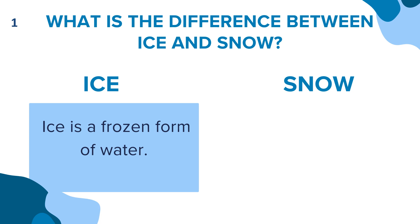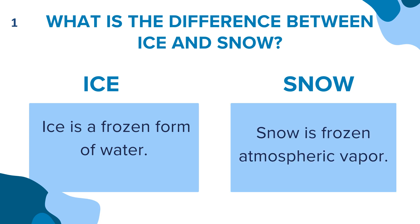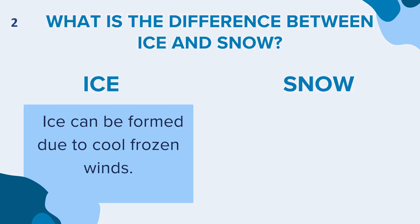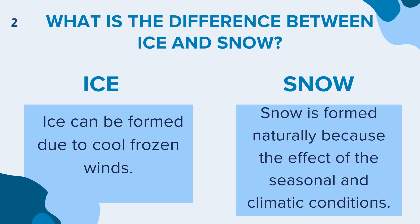First, ice is a frozen form of water. Ice is formed when water freezes at or below 0 degrees Celsius. Snow is frozen atmospheric vapor — snow forms when water vapor in the atmosphere condenses directly into ice crystals. Second, ice can be formed due to cool, frozen winds, and can also be formed using a refrigerator. Snow is formed naturally because of the effect of seasonal and climate conditions.